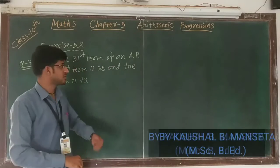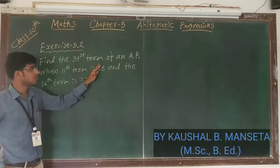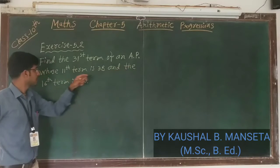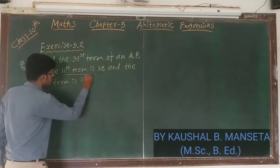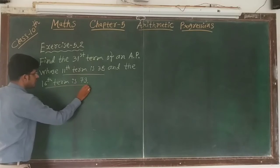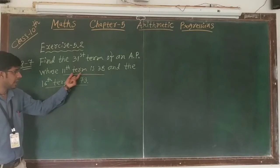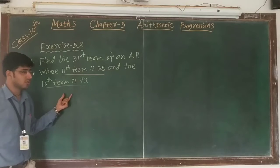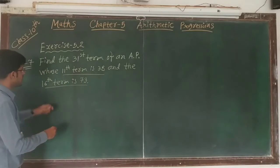Today we are going to start question number 7. Find the 31st term of an AP whose 11th term is 38 and the 16th term is 73. Here two terms are given: 11th term and 16th term. We have to find out the 31st term, so first of all we have to write down here.